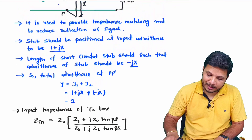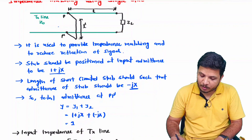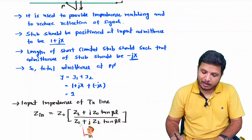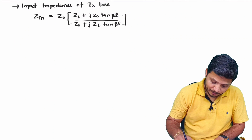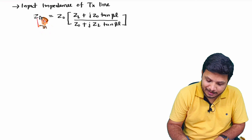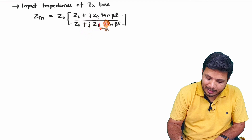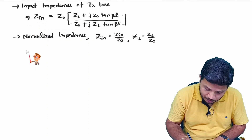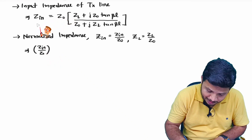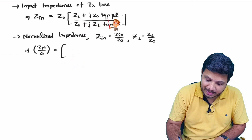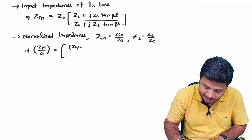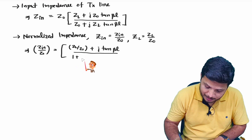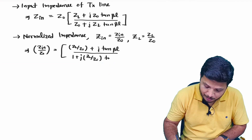All calculations are done in terms of normalized admittance. First I normalize the impedance: Z_in/Z0 = (ZL/Z0 + j·tan βL) divided by (1 + j·(ZL/Z0)·tan βL). Here I took Z0 common from the numerator and denominator to get the normalized impedance.